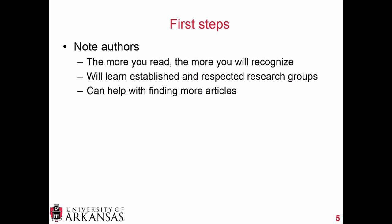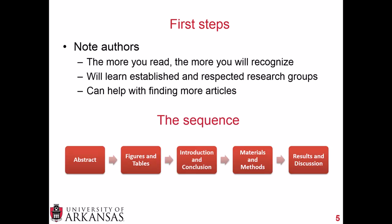After noting the authors, here is how I recommend reading a journal paper. First, start with the abstract. Then look at the pictures — the figures and tables. If you're still interested, move on to the introduction and conclusion. Then finish up with the materials and methods and the results and discussion. Reading a journal article in this sequence will be a much more rewarding and enriching experience. Let's briefly go through each one of these steps.